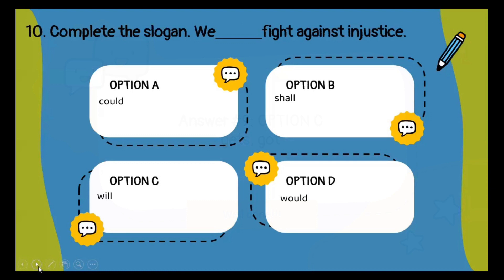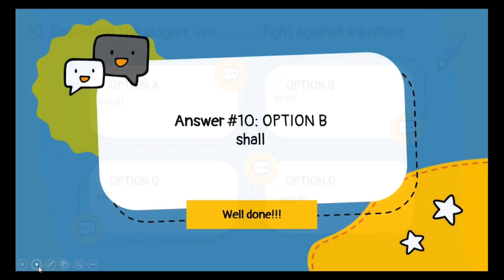Moving on to question number ten: it is fill-in-the-blank and you have to complete a slogan with the given options. 'We dash fight against injustice.' The correct option is: we shall fight against injustice.